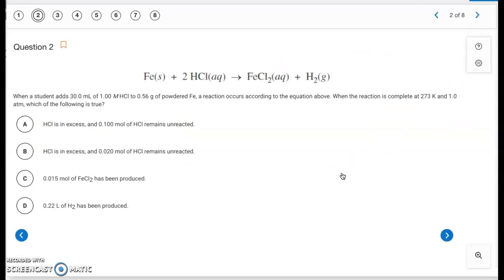Okay, question number two. We have that balanced equation. So when a student adds 30 milliliters of 1 molar HCl to 0.56 grams of powdered Fe, a reaction occurs according to the equation above. When the reaction is complete at 273 Kelvin and 1 atmosphere, which of the following is true? Okay, so with this one, there's a lot of different possibilities. So you kind of have to work through all of them.